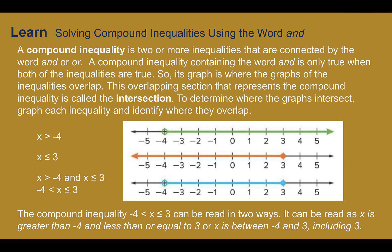Solving compound inequalities using the word AND. A compound inequality is two or more inequalities that are connected by the word and or or. A compound inequality with the word and is only true when both inequalities are true at the same time. Its graph is where the graphs of the inequalities overlap. The overlapping section is called the intersection, and to determine where they intersect, you graph them separately and then identify where they overlap.